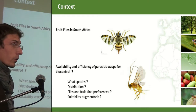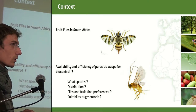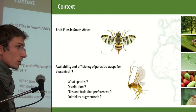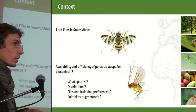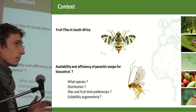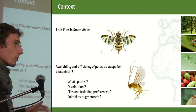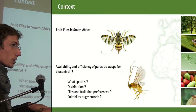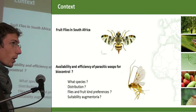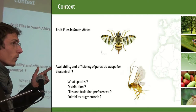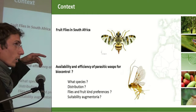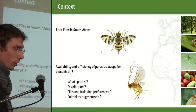The idea of this project was to get a better view of the parasitoids available there to potentially set up an augmentoria system. Augmentoria basically involves putting fallen fruits with fruit flies in a box with a mesh — the fruit flies can't escape but the parasitoids can emerge and parasitize other fruit flies, lowering the population.